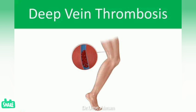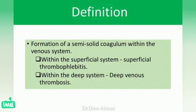In today's video we will learn about deep vein thrombosis, known as DVT. It is defined as formation of a semi-solid coagulum within the venous system, meaning a bolus of coagulated blood forms in the veins. This can occur within the superficial system, known as superficial thrombophlebitis, or within the deep system, known as deep venous thrombosis.